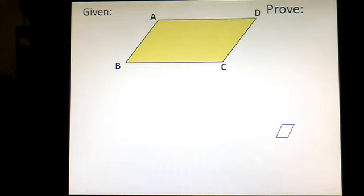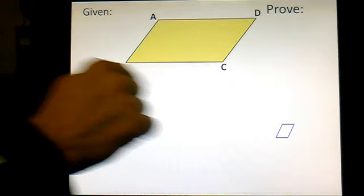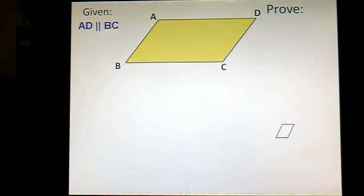The second proof, and we start with the same given. The given is it's a parallelogram, and I think all the letters are the same, A, B, C, and D, in a consecutive order here. So the given, if it's a parallelogram, it's got to have two sets of parallel sides that are opposite of each other.